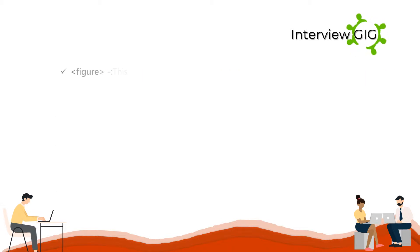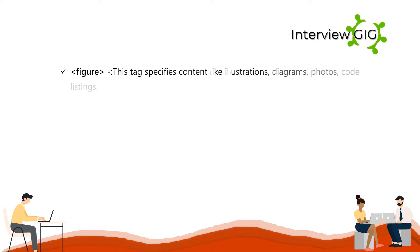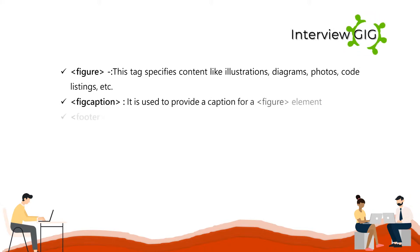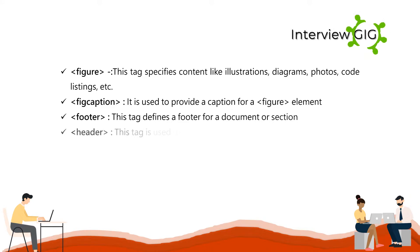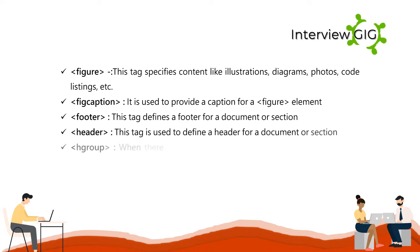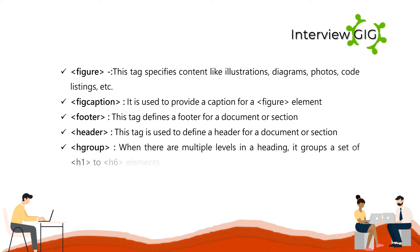Further structural tags include: Figure, which specifies content like illustrations, diagrams, photos, code listings, etc.; FigCaption, which is used to provide a caption for a figure element; Footer, which defines a footer for a document or section; Header, which defines a header for a document or section; HGroup, which groups a set of H1 to H6 elements when there are multiple heading levels; and Mark, which defines highlighted text.